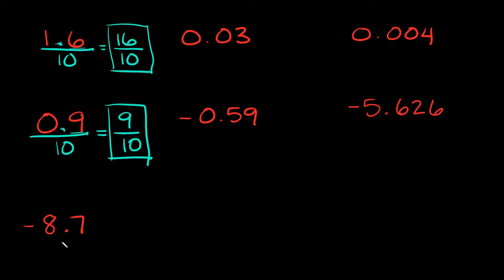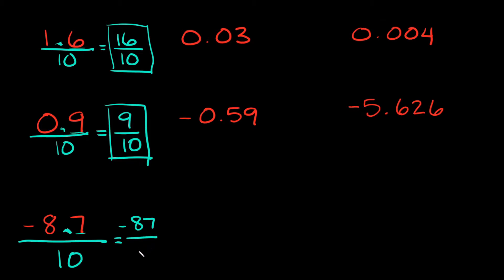Now this next example has a negative number, but nothing changes — it's still the same process. So we're just going to put a line under the whole thing and check what the last decimal place is. It ends right here in the tenths place, so I'm just going to put this whole thing over a 10. Remember, just drop the decimal up here and write your whole number. So we're going to have negative 87 over 10. That would be your answer.